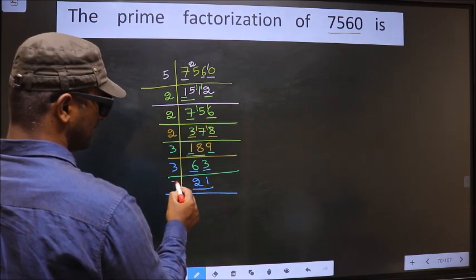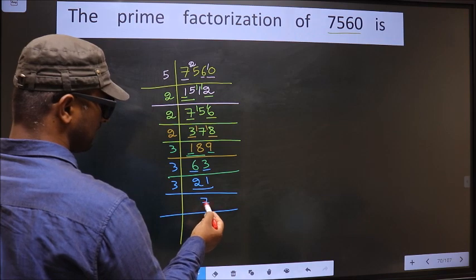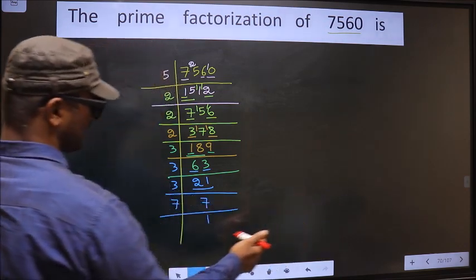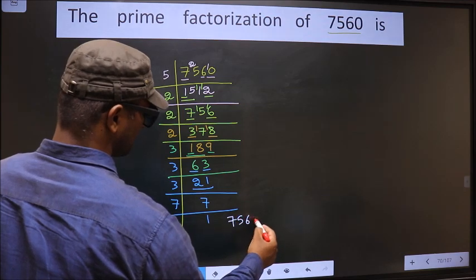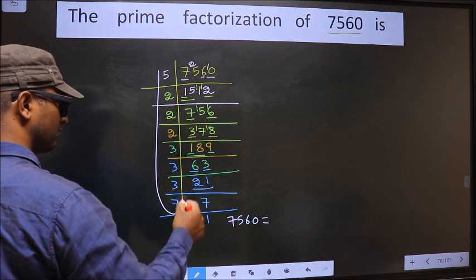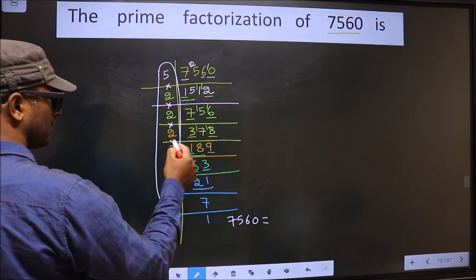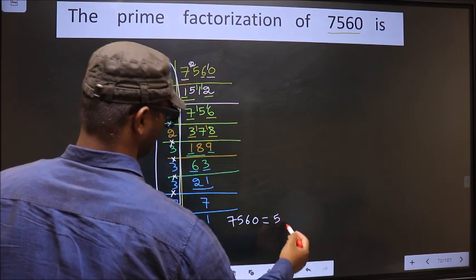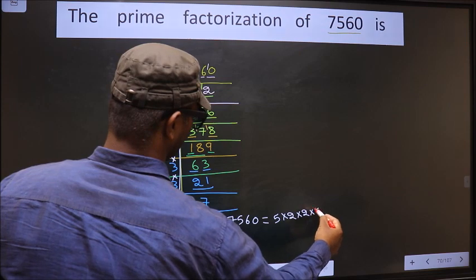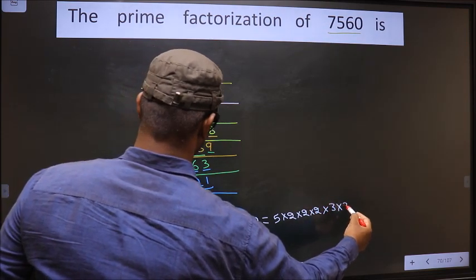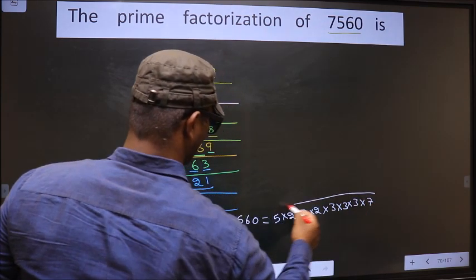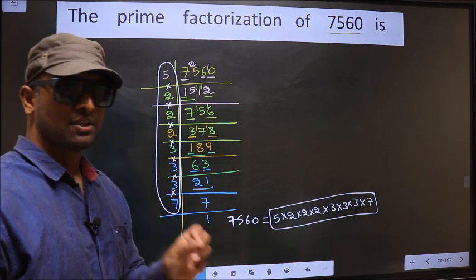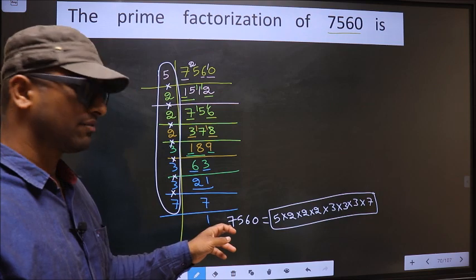Now here we have 21 — 21 is 3 sevens 21. Now we have 7. 7 is a prime number, so 7 ones 7. We got 1 here, so the prime factorization of 7560 is the product of these numbers — that is 5 into 2, into 2, into 2, into 3, into 3, into 3, and finally 7. So this is the prime factorization of 7560, also called the product of prime numbers of 7560.